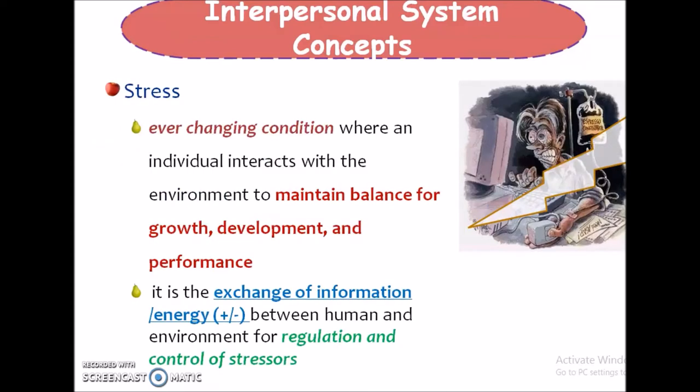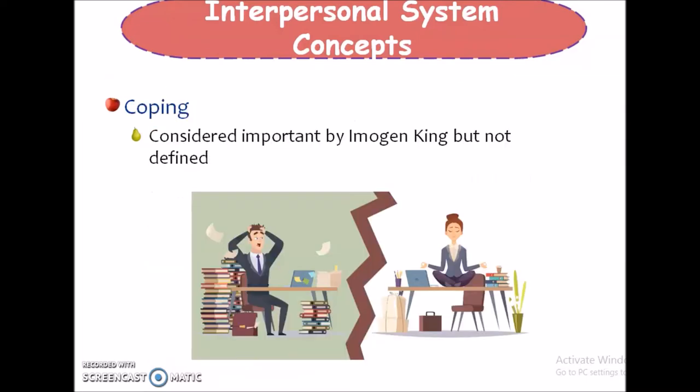Next is stress. Stress occurs when there is an ever-changing condition where an individual interacts with the environment to maintain balance for growth, development and performance. It is the exchange of information or energy and it can be negative or positive, occurring between the human and environment for regulation and control of stressors. Coping is considered very important in King's theory but it is not defined by King.